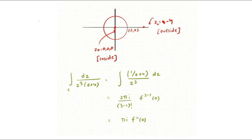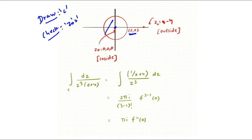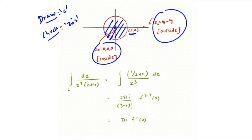Draw the closed curve — a circle with center (0, 0) and radius 2. The singularity at z = 0 lies inside this closed curve. The singularity at z = −4 is outside, since the radius is only 2. Therefore we must use the Cauchy integral formula for derivatives.